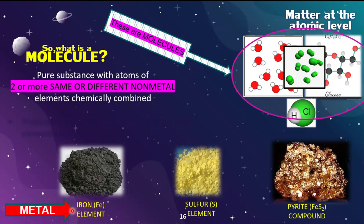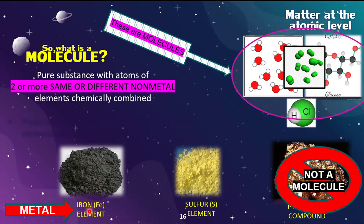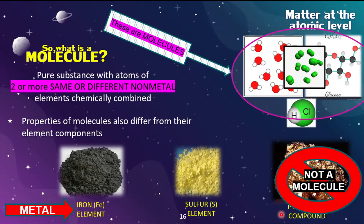Iron, being a metal, immediately disqualifies pyrite from being a molecule. Just the presence of a metal is enough to determine definitively that iron sulfide is not a molecule — just a compound. Similar to compounds, properties of molecules differ from their elemental components. Water, comprised of hydrogen and oxygen, which at room temperature exist as flammable gases, when combined chemically becomes a liquid at room temperature that also extinguishes flames — a drastic change in both chemical and physical properties.